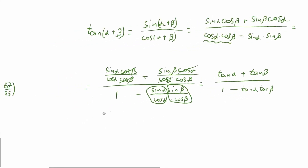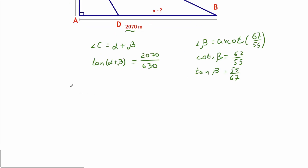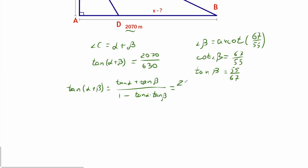Now let's go back to our equation and write down that tangent of alpha plus beta equals tangent alpha plus tangent beta, divided by 1 minus tangent alpha times tangent beta. And as we remember from above, this equals 2070 over 630.